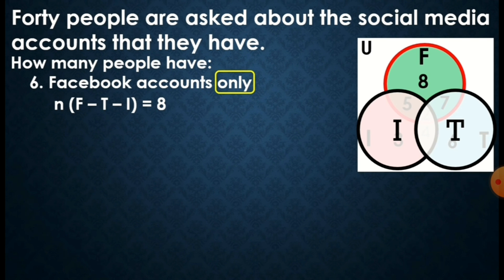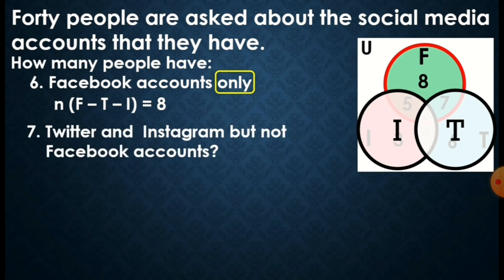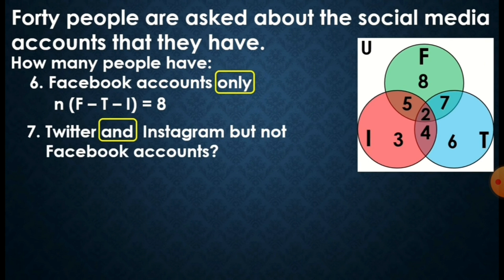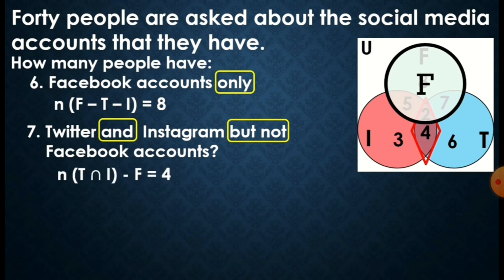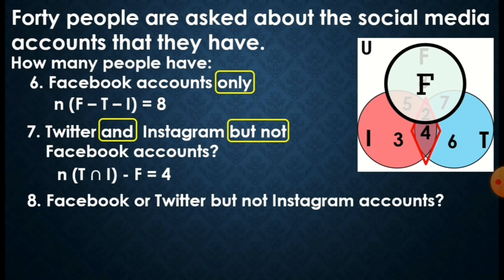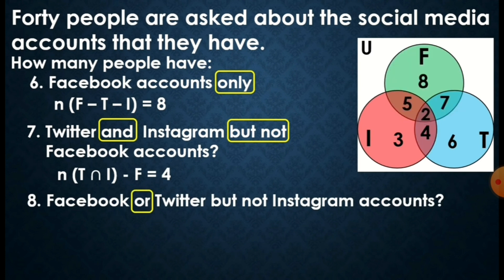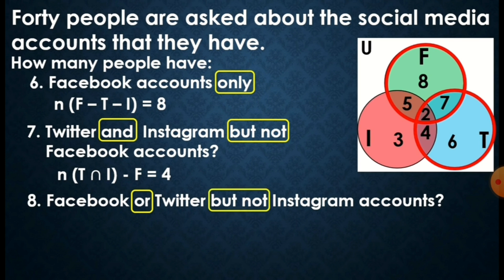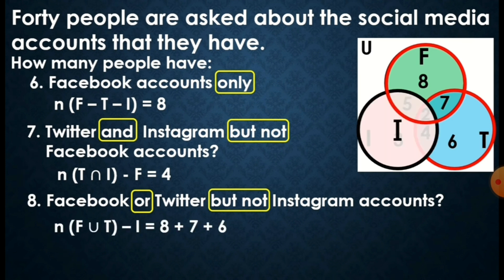When you say 'only,' we take away — that's the difference. For Twitter and Instagram but not Facebook accounts — 'and' means intersection — sali yung intersection ni Twitter and Instagram: 2 and 4. But merong word 'but not Facebook account,' so hindi kasali si Facebook. Kinatanggal ko si Facebook, so anong naiwan? 4 — ito yung tamang sagot. For Facebook or Twitter but not Instagram accounts — 'or' means union of Facebook at Twitter, but 'but not Instagram' means hindi kasali si Instagram. Tatanggalin natin si Instagram. Yung naiwan: 8, 7, 6 — we add them, the answer is 21.